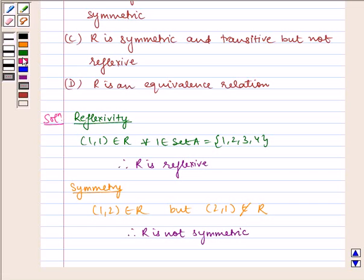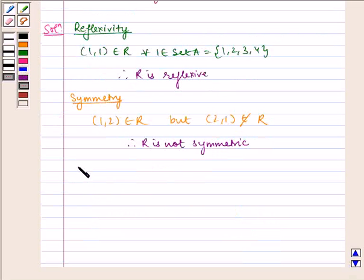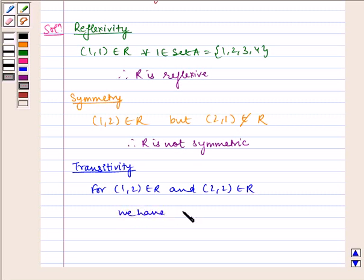Now let us check for transitivity. For (1,2) belongs to R and (2,2) belongs to R, we have (1,2) belongs to R. Therefore R is transitive.